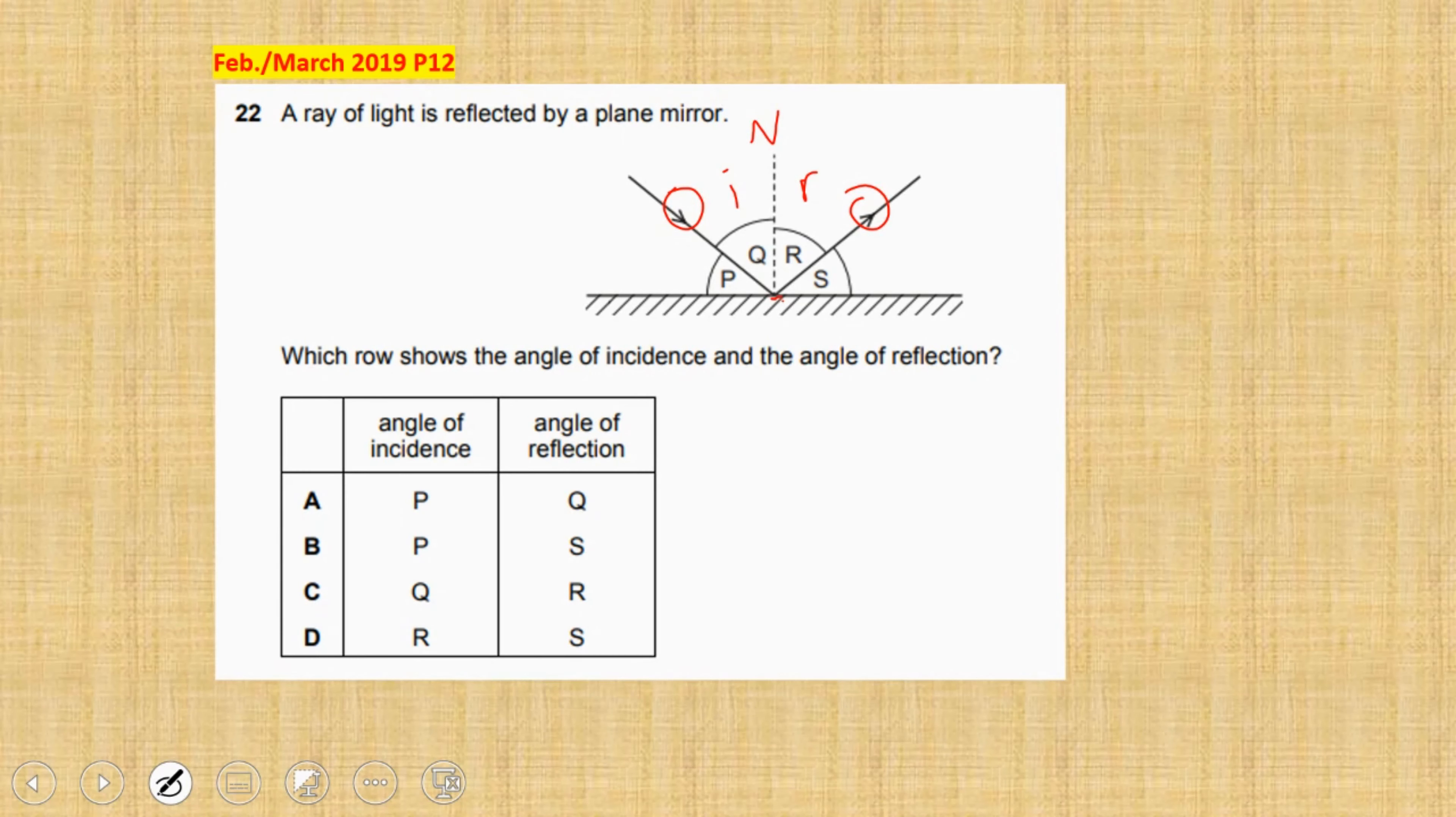So the correct answer is Q as the angle of incidence and R as the angle of reflection. So the correct answer is C.